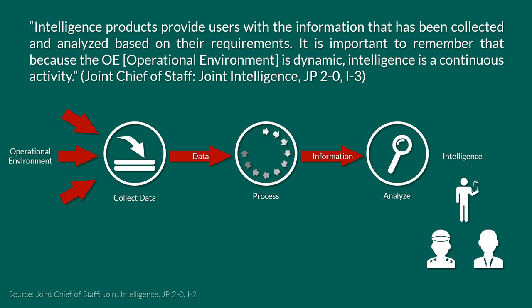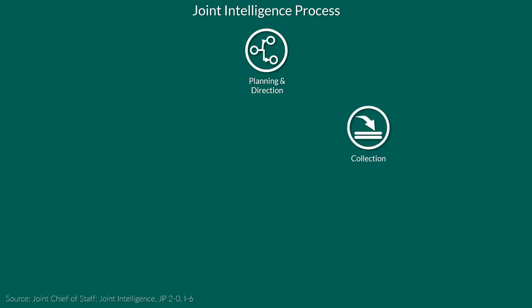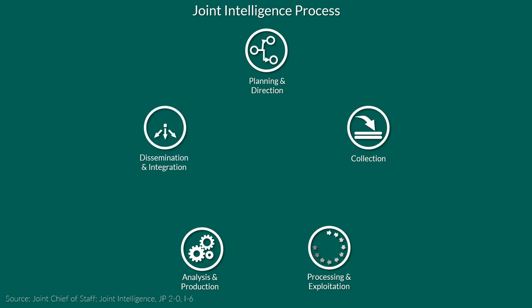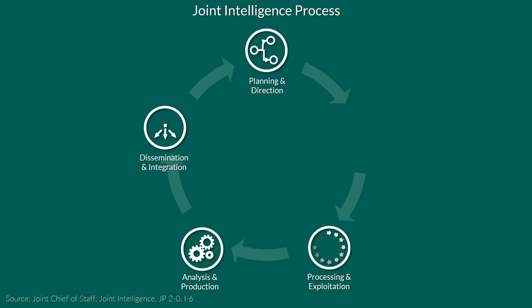The intelligence cycle or process has usually four to six activities, depending on the perspective. In this case, we go with the Joint Intelligence Process that entails six intelligence operations: planning and direction, collection, processing and exploitation, analysis and production, dissemination and integration, and evaluation and feedback, which happens continuously during the whole process. Note that not every activity requires every operation. For instance, a request for imagery may require planning and direction, but if the imagery already exists, there is no collection nor processing involved — somebody just gets it from the archive. Also, many operations happen simultaneously and continuously.